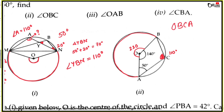OBCA is a quadrilateral. The sum of all four angles in any quadrilateral equals 360 degrees. Three angles are known: 140, 50, and 110, which sum to 300 degrees. The remaining angle OBC equals 360 minus 300, which equals 60 degrees.